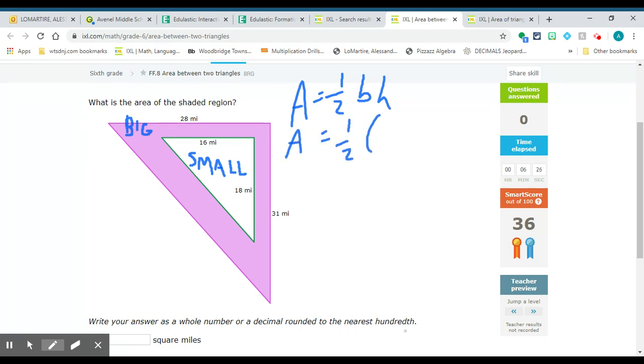That base is 28, and that base is 30, and the height is 31. When I multiply those all together, I get 434.